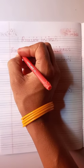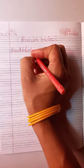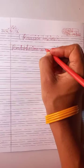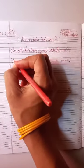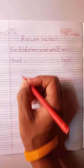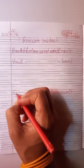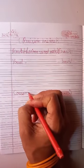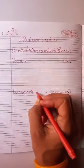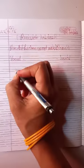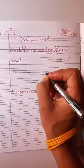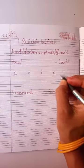Read, learn and write. Vowels. How many vowels? There are five vowels: A, E, I, O, U. So write here: A, E, I, O, U.